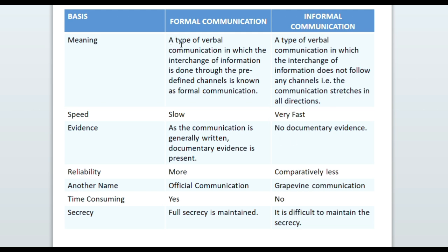The interchange of information done through predefined channels is known as formal communication. Informal communication is a type of communication in which the interchange of information does not follow any channel — you don't have to choose words carefully, like when talking with friends or parents. This communication stretches in all directions.